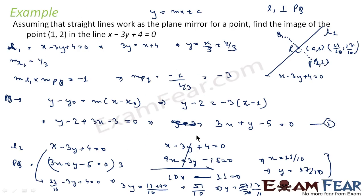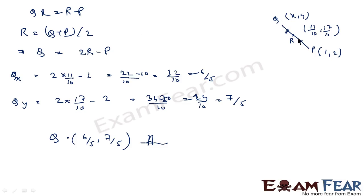We had line L1 and a point p, and we had to find the image q. Line PQ is perpendicular to line L1. We first found the equation of PQ using slope and point p. We equated L1 and PQ to get point r as (11/10, 17/10). Since r is the midpoint of PQ, we used the formula r equals q plus p by 2, giving q equals 2r minus p. So q is (6/5, 7/5).